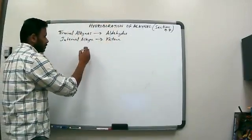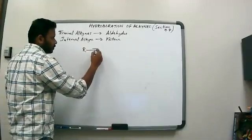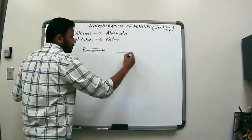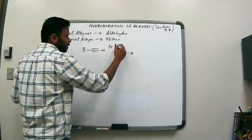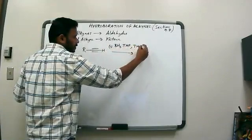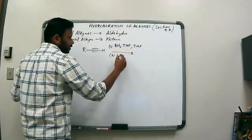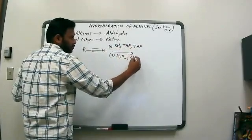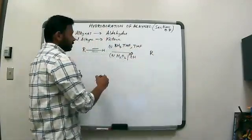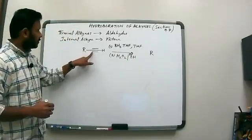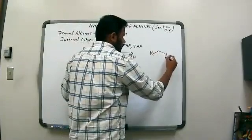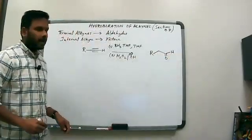To give you an overview before going into the mechanism: if we start with a terminal alkyne with a hydrogen here, and we do a hydroboration oxidation — done in steps, so BH3/THF in THF as a solvent, then oxidation using peroxide and base, a basic oxidation — our product is going to be an aldehyde.